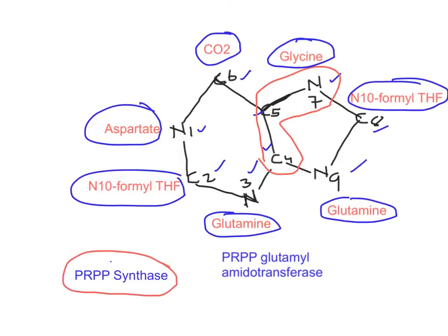Two enzymes most important to remember in purine de novo biosynthesis: PRPP synthase, which makes PRPP, and PRPP acts as a positive modulator on the rate-limiting regulated enzyme — PRPP glutamyl amidotransferase, also called glutamine phosphoribosyl amidotransferase. These are the two regulated enzymes, with PRPP glutamyl amidotransferase being the most regulated one.